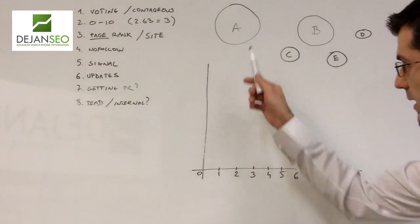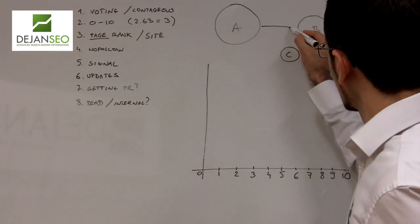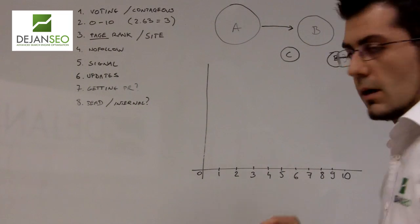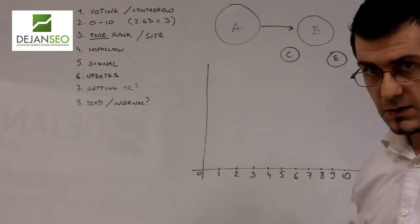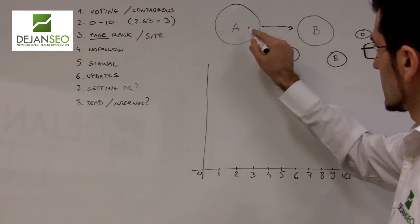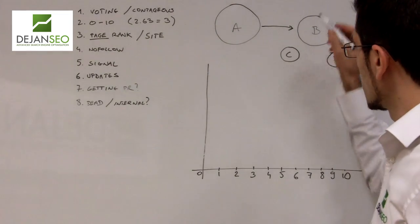So let's take a scenario where a very reputable page A links to a page B, an external site that's a completely different site. This link from page A to page B is essentially a vote from page A to page B.